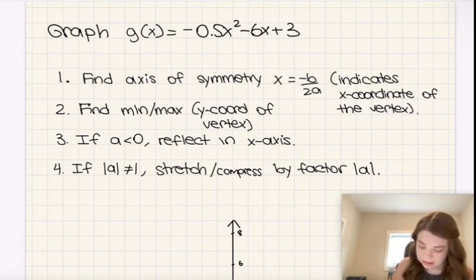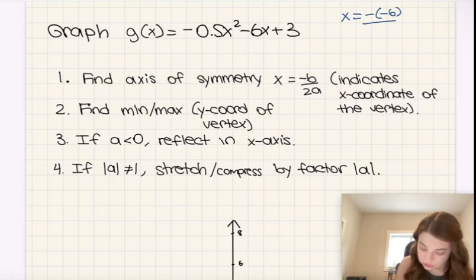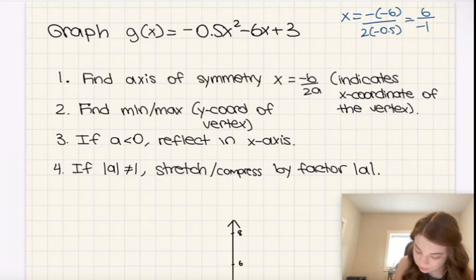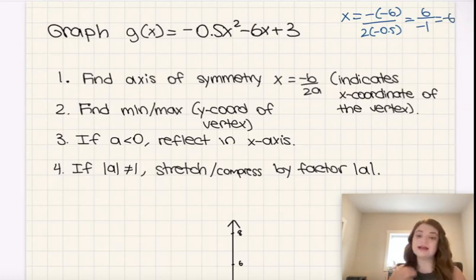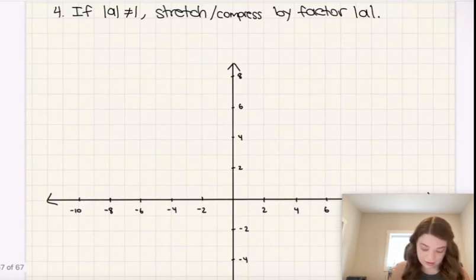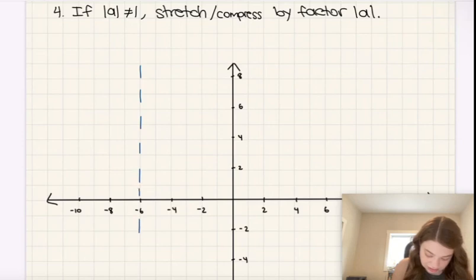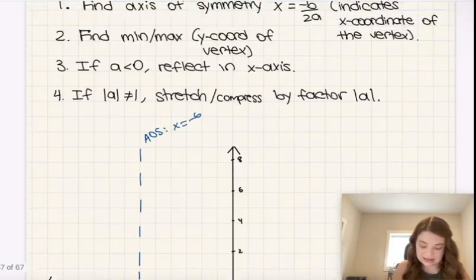So let's do that. Here I have x equals negative b, so in this case negative negative 6, over 2a. So 2 times negative 0.5, that's going to be 6 over negative 1, which is negative 6. So x is negative 6 is our axis of symmetry. And while we're thinking about it, I'm just going to plot that here. I'm just going to plot axis of symmetry x is negative 6, like that.